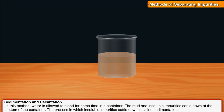Sedimentation and decantation. In this method, water is allowed to stand for some time in a container. The mud and insoluble impurities settle down at the bottom of the container. The process in which insoluble impurities settle down is called sedimentation.